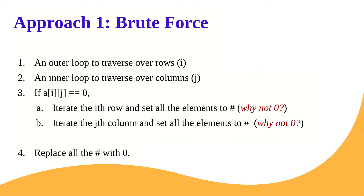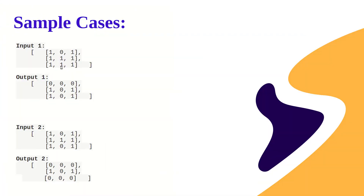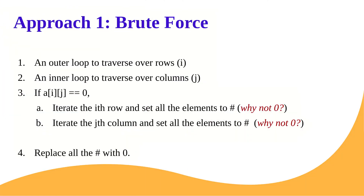We set the placeholder for the entire row and the entire column when an original zero is found. Finally, after all traversal is complete, we replace all placeholder elements with zero, since the problem requires the output to contain zeros. This is the brute force approach. However, for each element we find as zero, we iterate all rows and all columns, making this approach of high complexity and not very efficient.